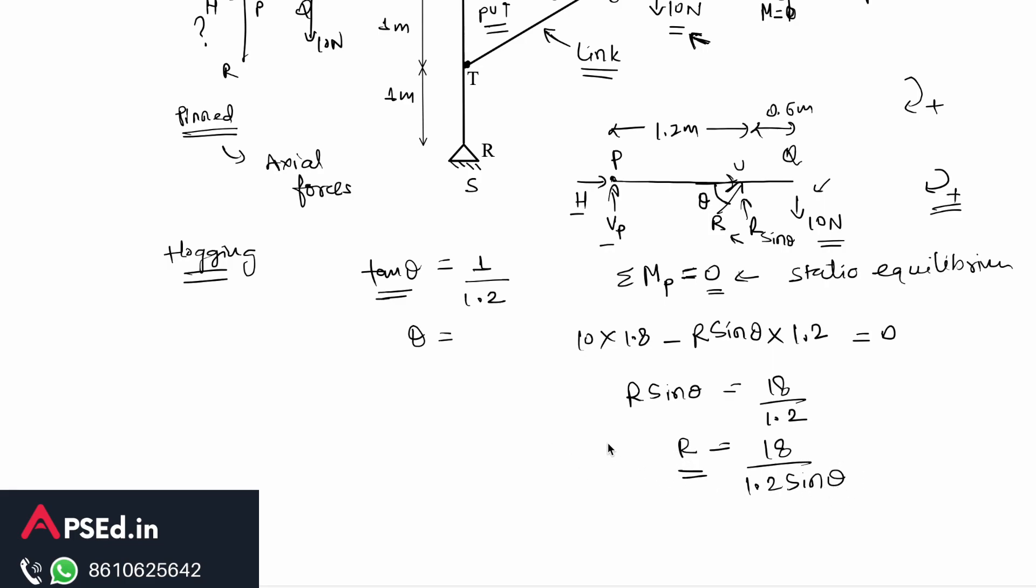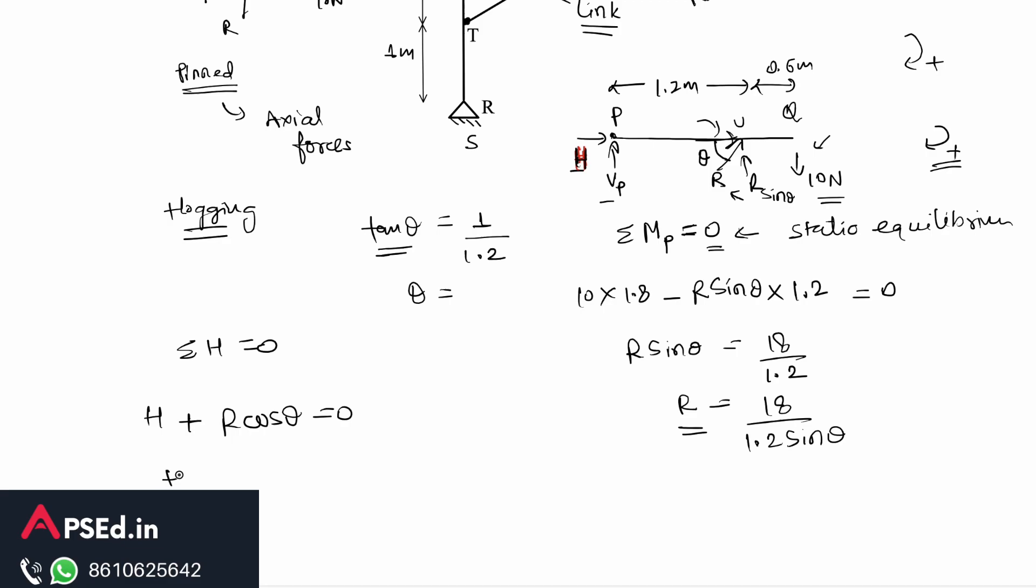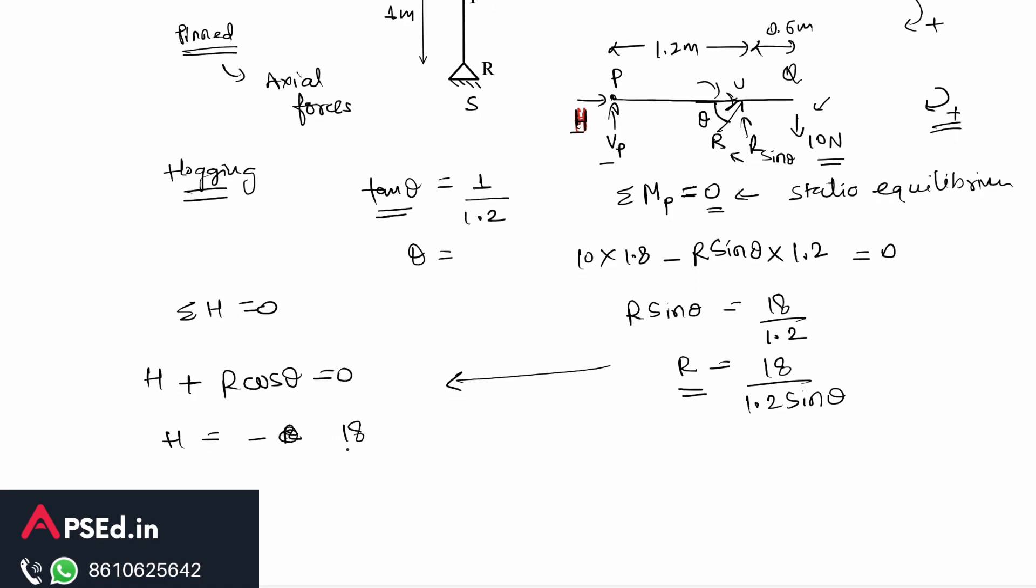Now we have the value of R here, but we are interested, the question demands the value of this horizontal reaction H. So we want to find this. For that we can simply write the summation of horizontal forces equal to zero, because we just have two horizontal forces: first of all this H and the component of this reaction R. So H plus R cos theta is equal to zero. From that I am getting H is equal to minus R cos theta. So if I put the value of R from this previous equation here, I will have 18 by 1.2 sin theta, that is the value of R, times cos theta.